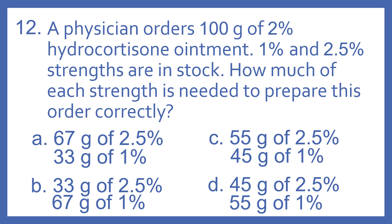Number 12. A physician orders 100 grams of 2% hydrocortisone ointment. 1% and 2.5% strengths are in stock. How much of each strength is needed to prepare this order correctly?